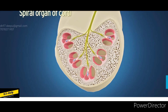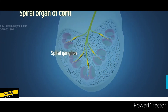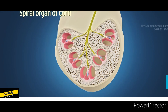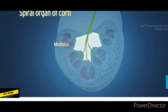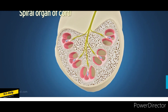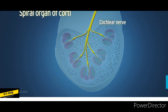The peripheral processes of bipolar neurons of the spiral ganglion supply the inner hair cells and outer hair cells. The spiral ganglion is located in the spiral canal within the modiolus, near the base of the spiral lamina. The central processes of the ganglion cells form the cochlear nerve.